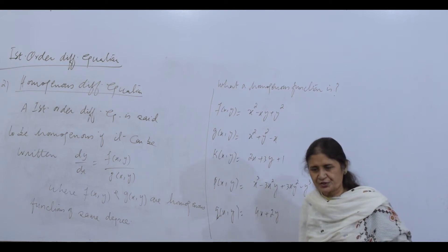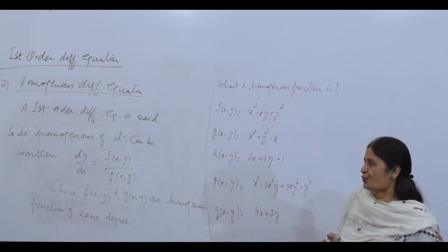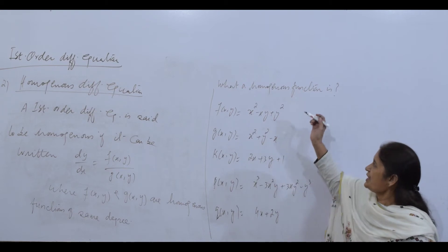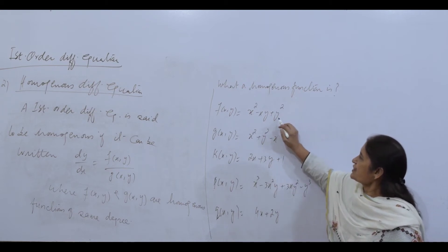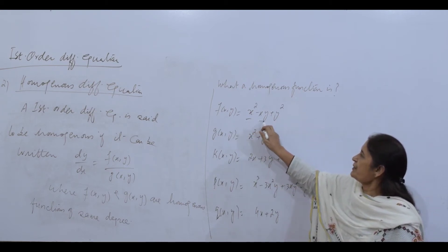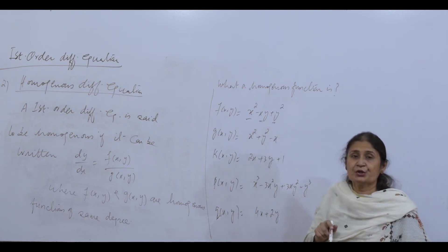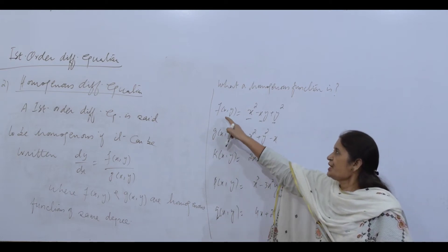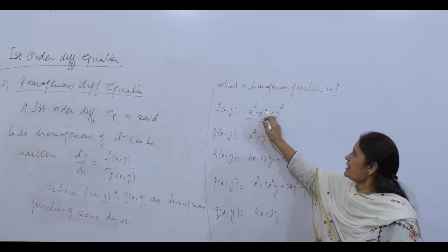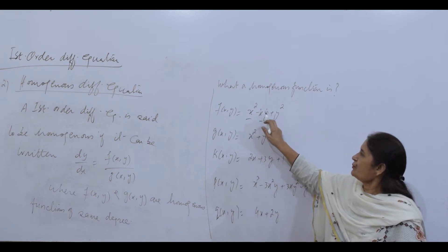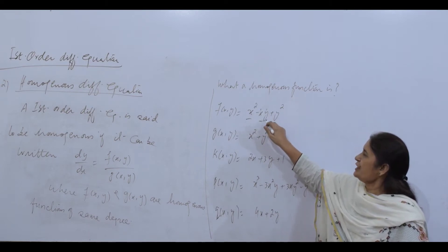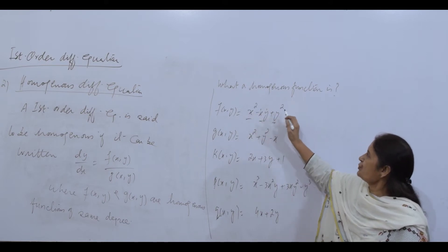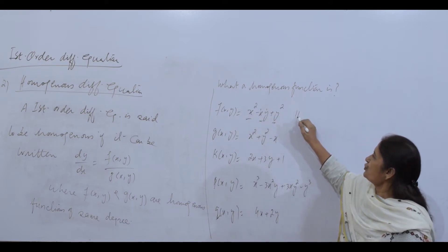According to the definition, a function is homogeneous if all its terms have the same degree. For example, x² − xy + y² has three terms each of degree 2, so it is a homogeneous function of degree 2. Similarly, x² + y² − x is non-homogeneous because the term −x has degree 1 while the others have degree 2.